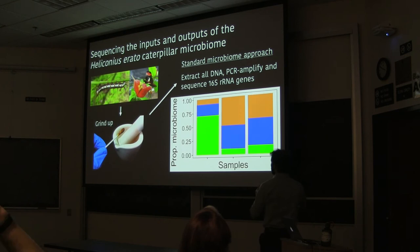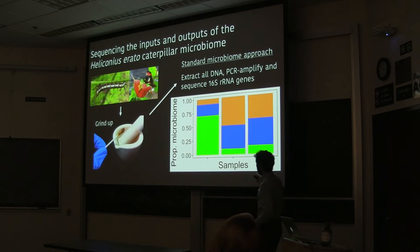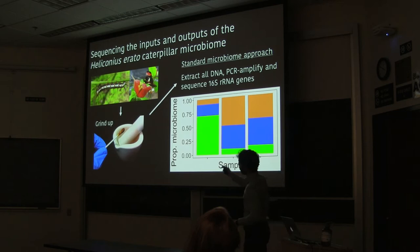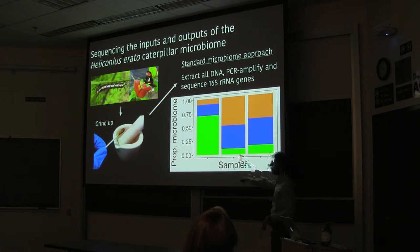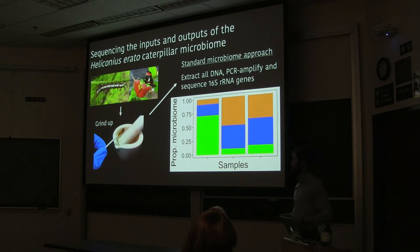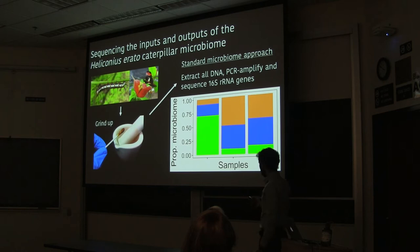What you get from this pipeline is a dataset showing, for different samples, the proportion of the microbiome belonging to different microbial taxa. So for example, one caterpillar might have a lot of one microbe and little of another. You're able to describe the composition of microbes in your sample and see how that changes among samples and how it might associate with factors like species or host plant.